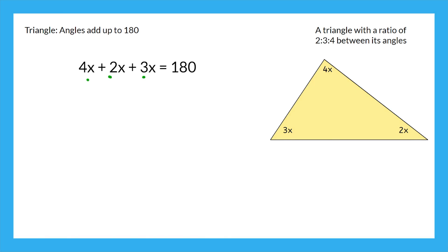Now, we combine like terms to get 9x, and divide that by 9, and x is 20. So that means the smallest angle is 40 degrees, the one on the left is 60, and the one all the way on top is 80 degrees. Those add up to 180, just like we knew they would.